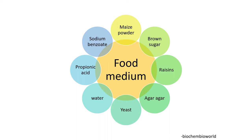The food medium components: we require a carbohydrate source, specifically maize powder, brown sugar, and raisins. To solidify the food medium, agar agar is used. To ferment the food medium, yeast is used. Propionic acid and sodium benzoate are also used as food components. Propionic acid checks the growth of bacteria, and sodium benzoate checks the growth of fungi.